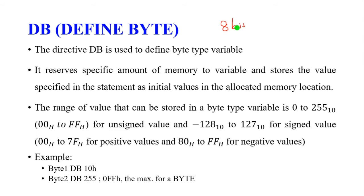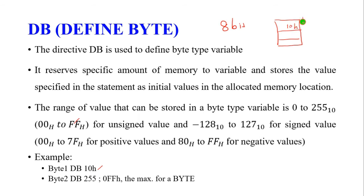The range of values that can be stored in a byte type variable is 0 to 255 for unsigned values. In hexadecimal, this is 00h to FFh. For signed values, the range is -128 to +127, represented as 00h to 7Fh for positive values and 80h for the start of negative values. For example, 'BYTE1 DB 10h' means the memory location named BYTE1 stores the value 10h.